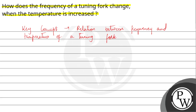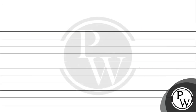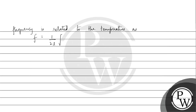So, this relation is given by the expression 1 by 2L root T by M, where L is the length of the tuning fork, T is the tension and M is the mass of the tuning fork. So, with this formula, we will answer this question. Frequency is related to the temperature as F is equal to 1 by 2L root T by M.